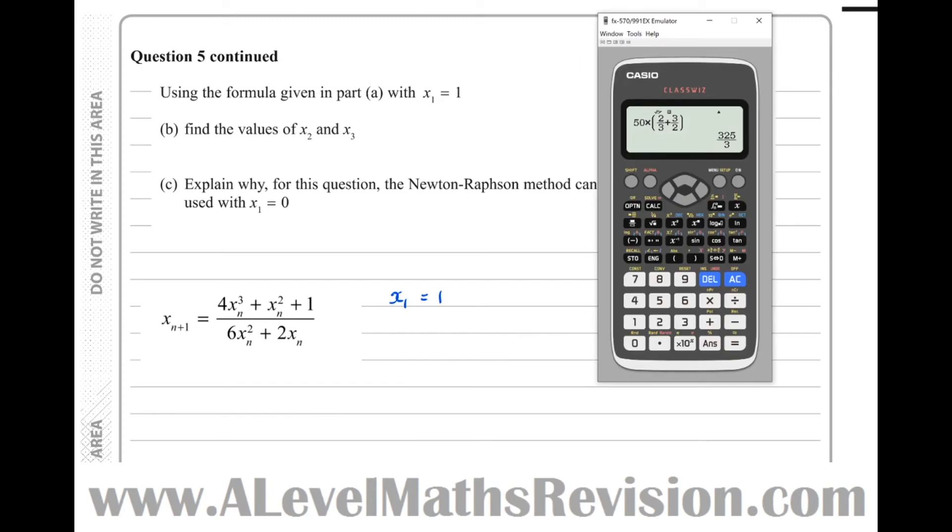What we need to do in the calculator now is store 1 in the answer button, so 1 equals. Now 1 is stored in the answer button. Let's type this iterative formula in, so fraction button first, then we've got 4 answer cubed, plus answer squared, plus 1, over 6 answer squared, plus 2 answer.